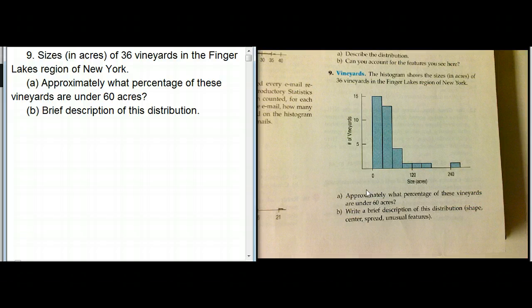They start out with a very specific quantitative question and then a more general question: give a description of the distribution. So the first thing is to really make sure we understand what a histogram means. Remember that we've got bins - we're separating out the x-axis, the size axis, into bins.